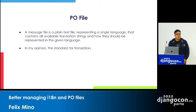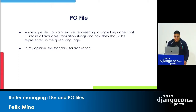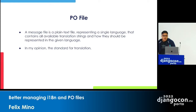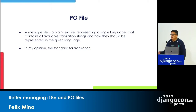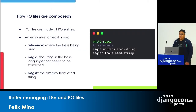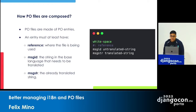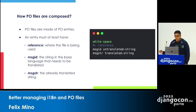So what is a PO file? How many of you have done internationalization in Django? Almost everyone — so you know what I'm talking about. A PO file is a message file that is plain text and represents a single language in Django. It contains all the strings that need translation in the given language. In my opinion, it's the standard for translation. PO files are made of PO entries, which have a whitespace, references, a message ID (the untranslated string), and a message string (the already translated string). A PO entry needs at least these three fields to be valid.